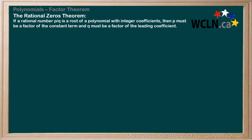Let's see this more general rational zeros theorem in action. Look at this example: determine all possible roots of p of x, which is 6x cubed plus 7x squared minus 1. Based on what we just learned, our first order of business will be to determine all the factors of both the leading coefficient and the constant term.